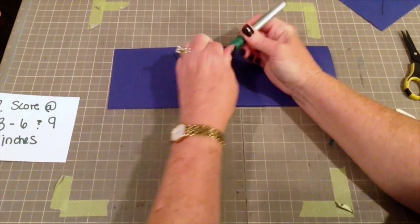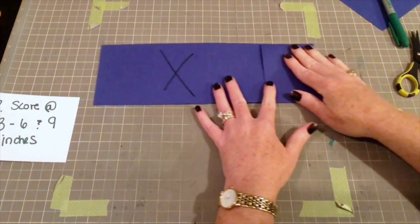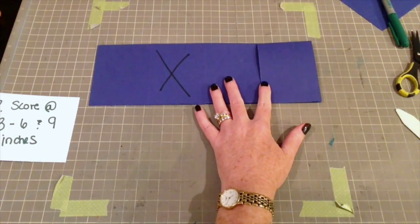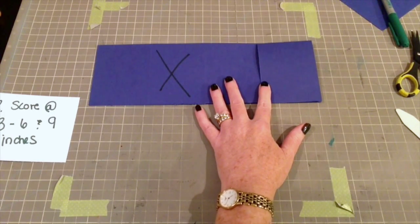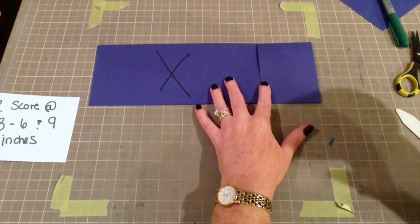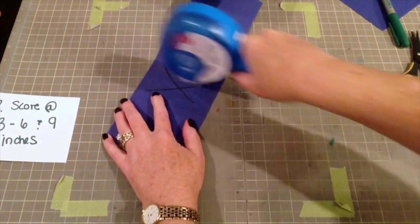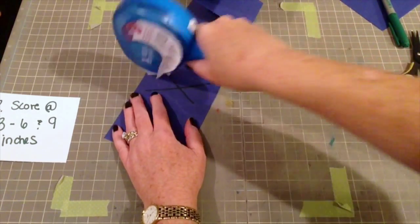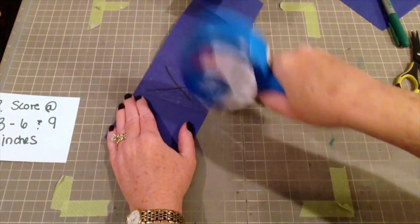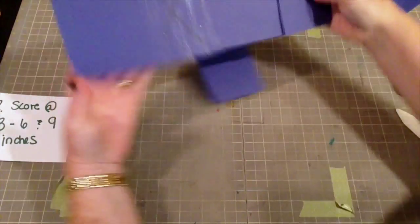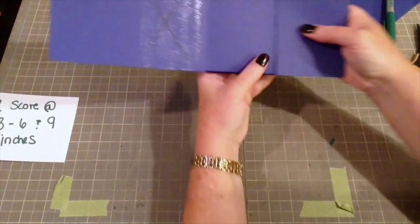And this second panel, if we're now talking from left to right - this second panel, I put an X there, because that's where you're going to put your adhesive down. You want to use a strong adhesive. I'm using the Xyron Mega Runner because it's really going to stick. As you can see, I'm putting a lot down, because again, you want this to stick. This is what's holding it together.